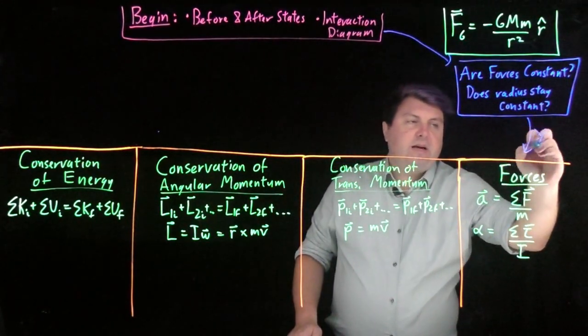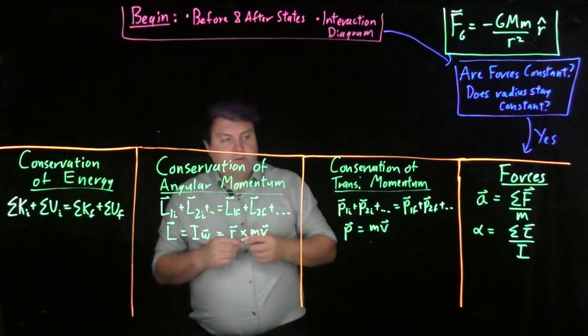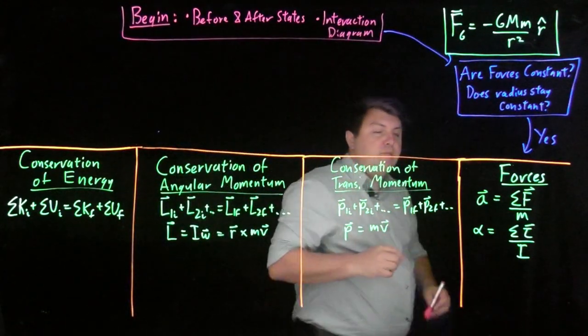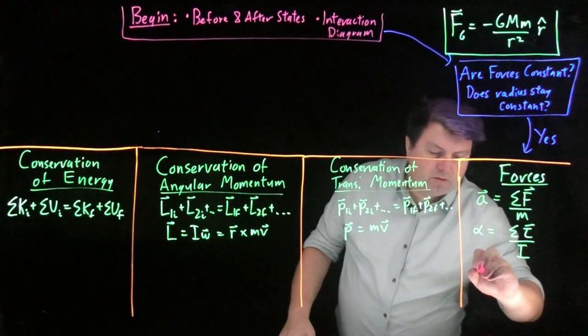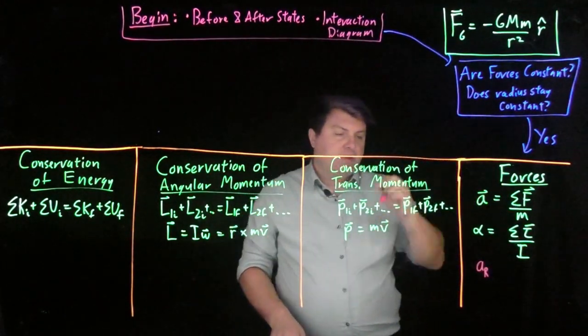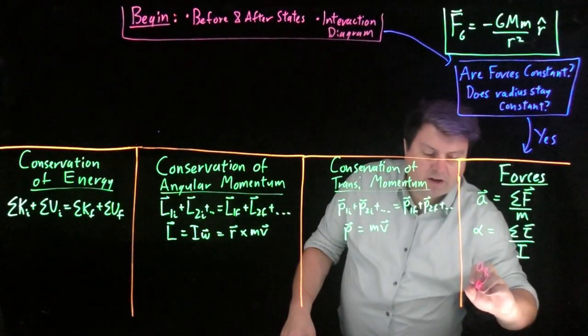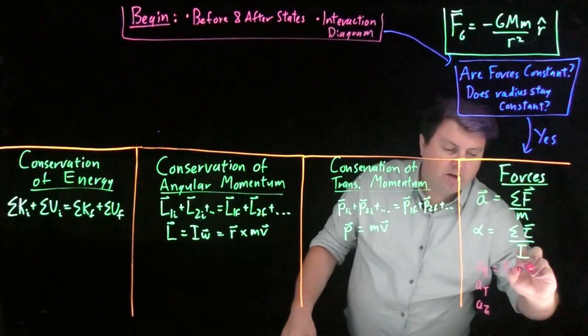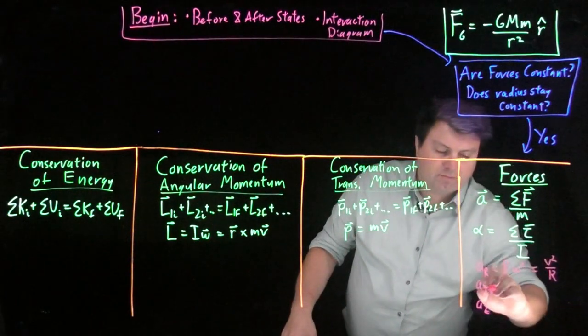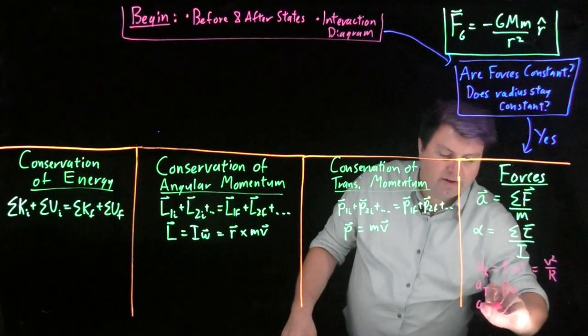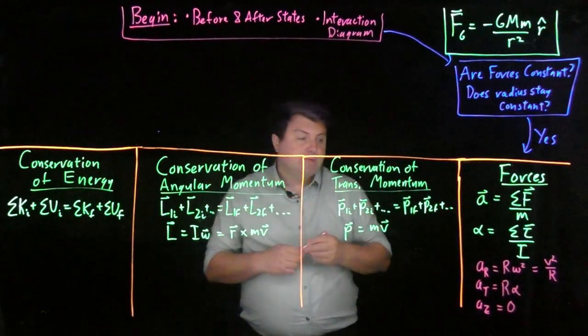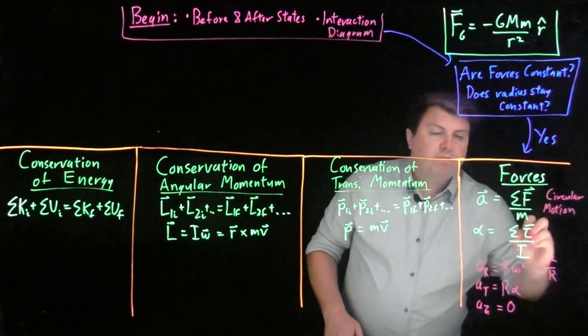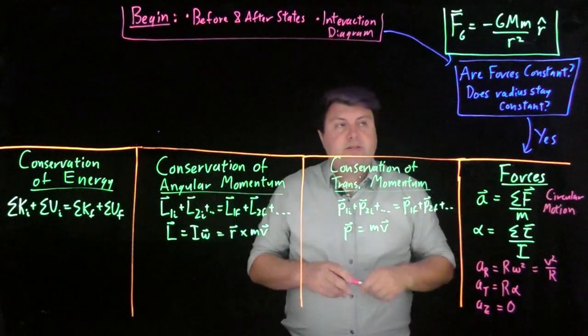So if we can answer yes to this, then we are going to use forces. If our forces are constant, we should use forces. And specifically, if the radius stays constant, that means it's moving in a circle. So we can use not just any sort of acceleration or angular acceleration, but specifically for the RTZ system. Our acceleration in the R would be equal to R omega squared or V squared over R. Our acceleration in the T is R times alpha, and our acceleration in the Z is zero, that we have circular motion.